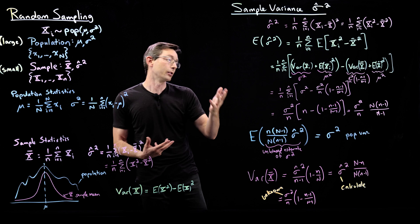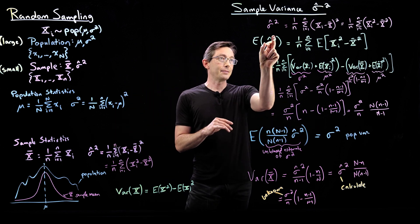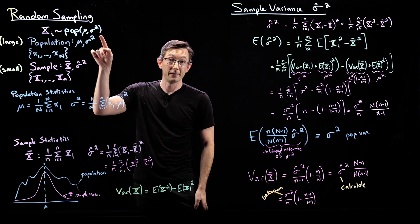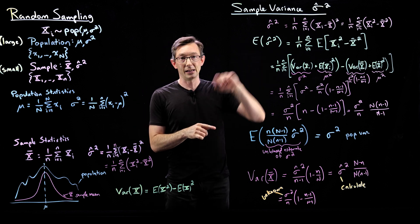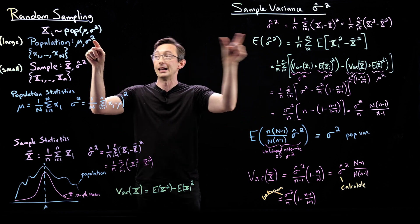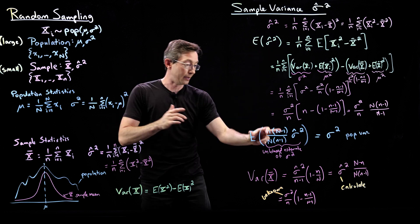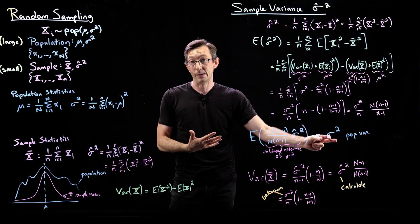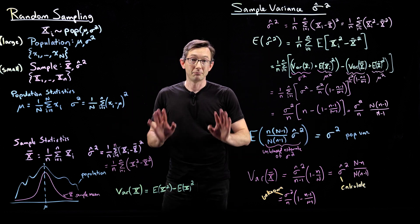Spoiler alert: since sigma hat squared tells me something about the population variance, the variance of sigma hat squared is going to tell me something about how good of an estimate that is — how much spread there is between this estimate and the actual population variance.